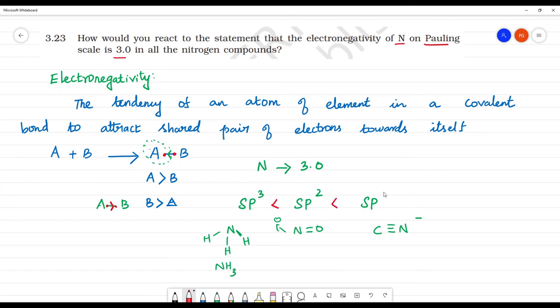Sp will have more electronegativity value because it has more s character. Sp has 50% s and 50% p, so this will have higher electronegativity.